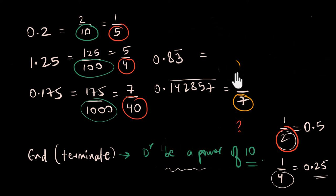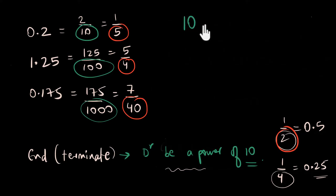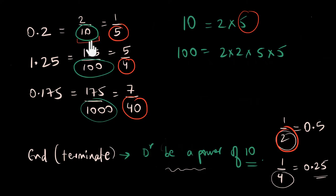Here's what's going on: we still need powers of 10 in the denominator, but we don't always need to start with them. Look at 10 — it's made up of a 2 and a 5. All higher powers of 10 are also made up of 2s and 5s: 100 has two 2s and two 5s, 1000 has three 2s and three 5s. So if you have a 5 in the denominator, multiply numerator and denominator by 2 to get 10 — and there's your power of 10.